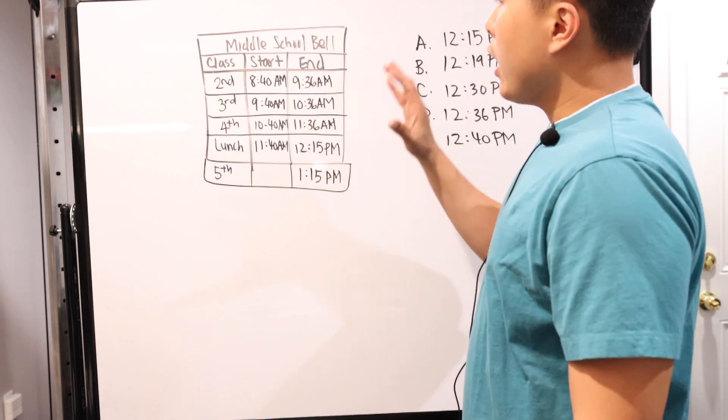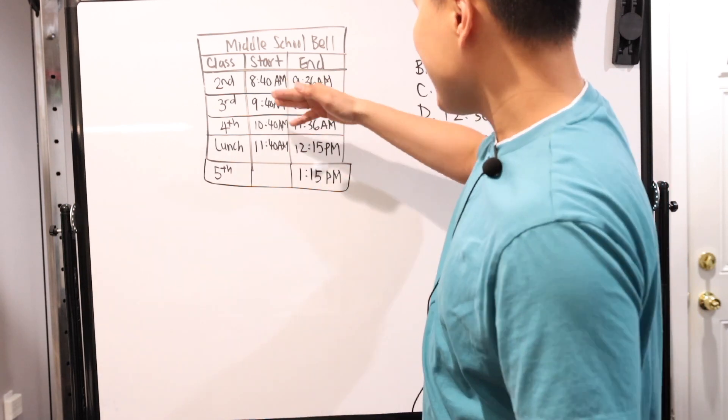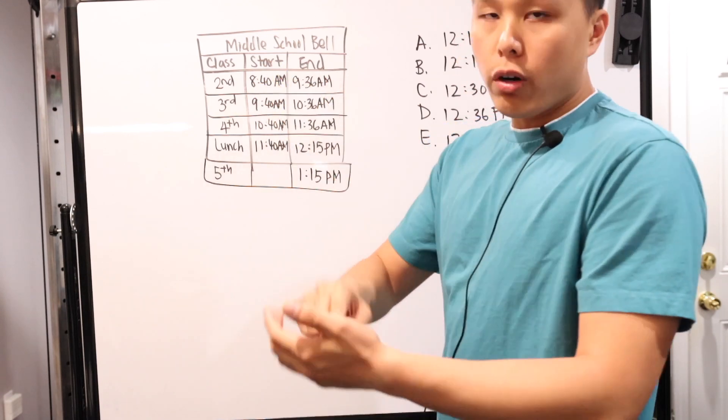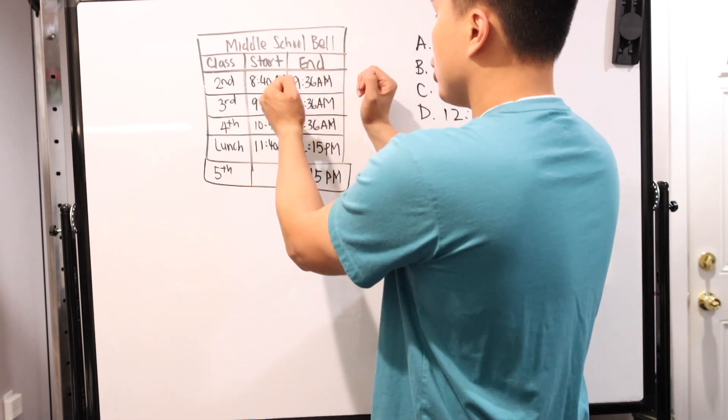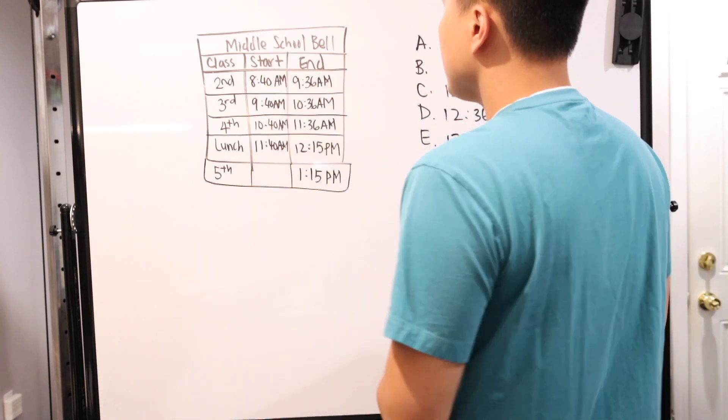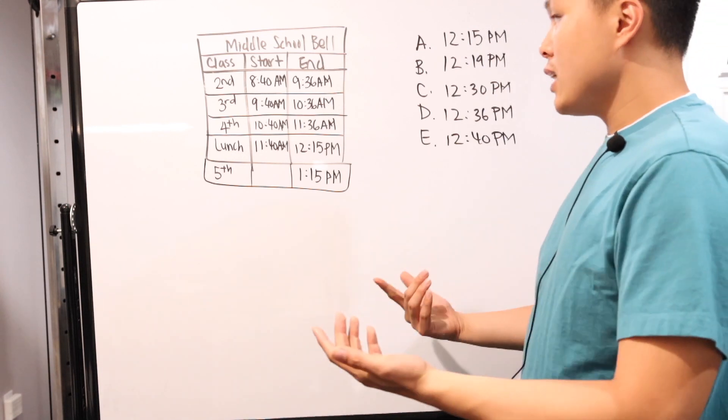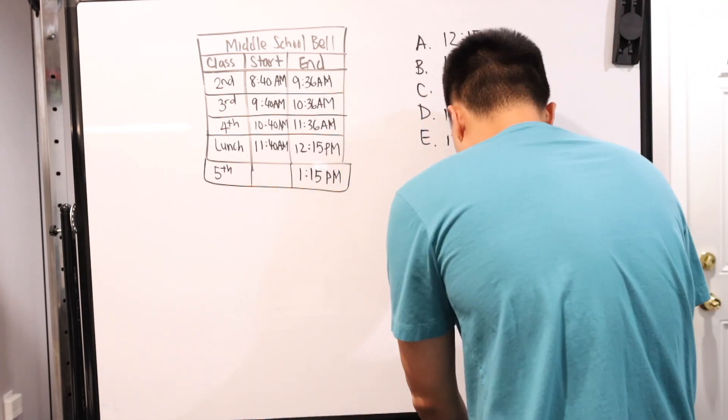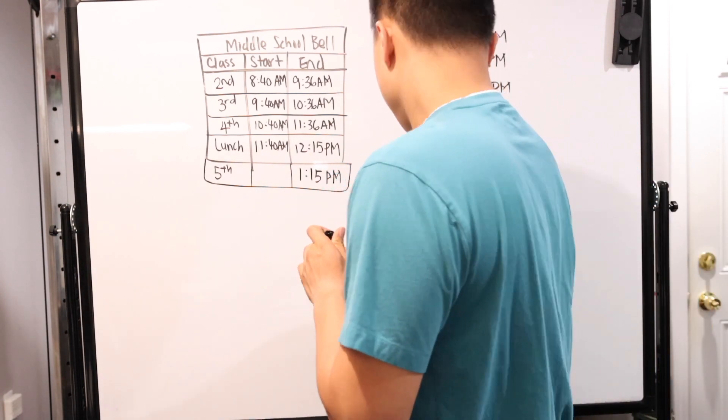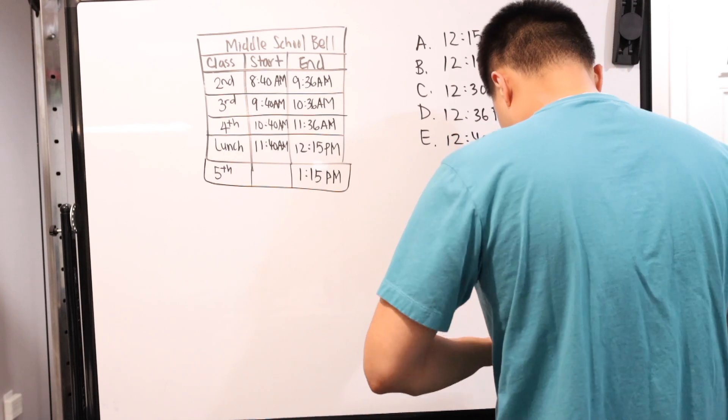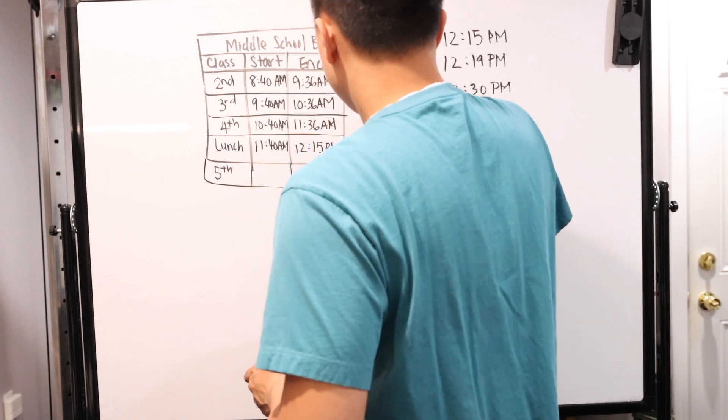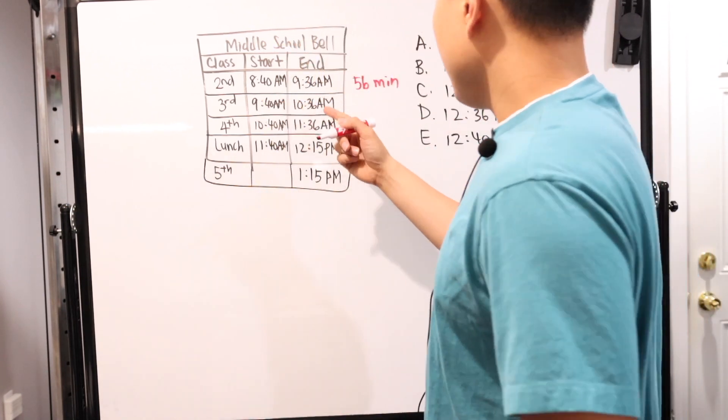So basically, the whole core of finding the missing information is not to see the pattern going up and down, but to see the difference. Starting and end time. How much is each chunk of time different? And then make sure that they all get the same equal amount. So, from 8:40 to 9:36, we've noticed that actually what happened is we have 56 minutes of class time.